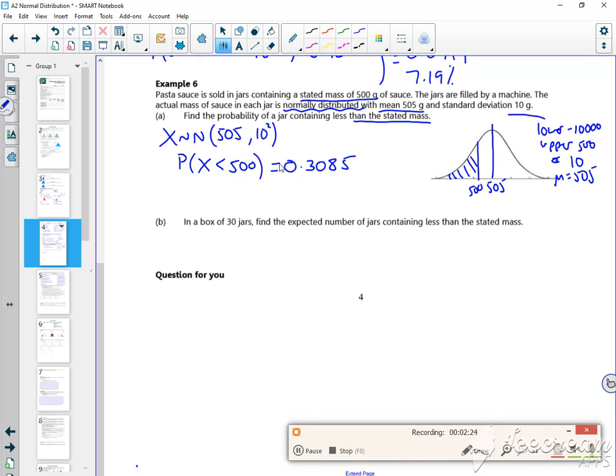So then it says, in a box of 30 jars, find the expected number. Now, you kind of know expected numbers. It's just the number of times it happens, times by the probability. It kind of moves us over to a binomial for an expected number. It's like if you were doing a coin and you were flipping it a hundred times, how many times would you expect to get a tail? It's binomial success and failure.